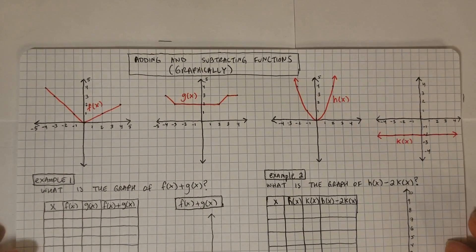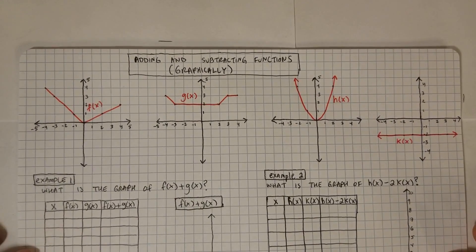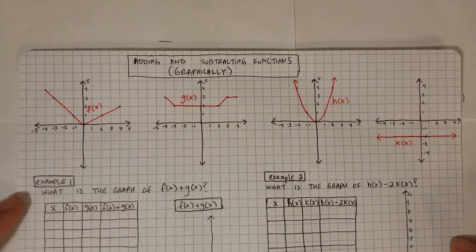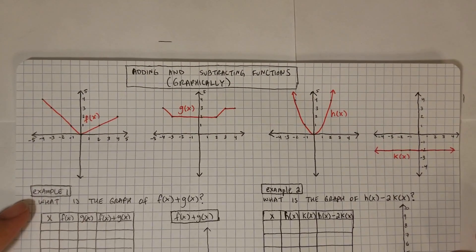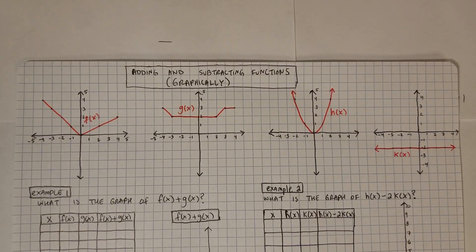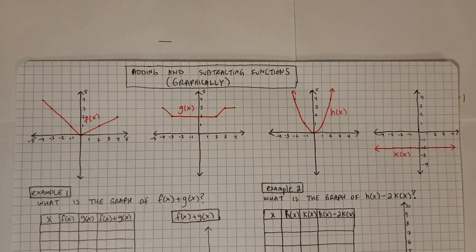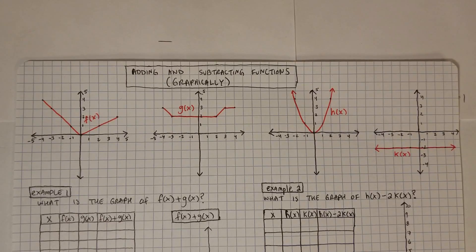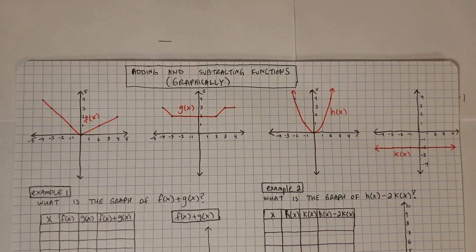In this video we're going to be talking about adding and subtracting functions graphically, meaning if they ask you what is a graph added to another graph or a graph subtracted by another graph, you'd be able to figure it out just by looking at the values of the graph. The idea is that you would make a table for the domain for which the graph actually exists.